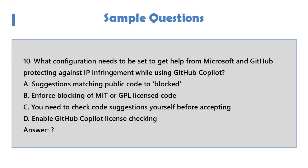Question 10: What configuration needs to be set to get help from Microsoft and GitHub protecting against IP infringement while using GitHub Copilot? A. Suggestions matching public code to be blocked. B. Enforce blocking of MIT or GPL licensed code. C. You need to check code suggestions yourself before accepting. D. Enable GitHub Copilot license checking.